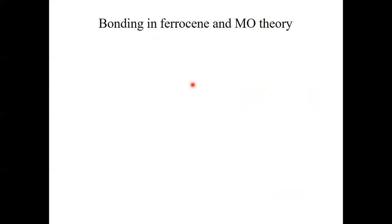Now let's look at ferrocene in more detail using molecular orbital theory and ligand field theory to confirm the stability of the structure. In ferrocene, the cyclopentadienyl units are actually in the staggered conformation. We will make a slight simplification and assume they're both in the eclipsed conformation — this is acceptable because the energies of the respective orbitals don't change much. Assuming this eclipsed structure, the point group will be D₅h.